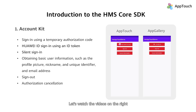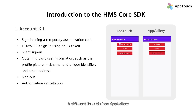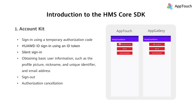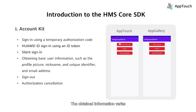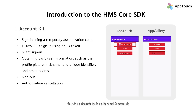Let's watch the videos on the right and learn about the sign-in authorization function of AccountKit. Sign-in authorization on AppTouch is different from that on AppGallery — the two videos will shed some light on the differences. First, you need to obtain the authentication mode icon and its information by calling the relevant API of AccountKit. The obtained information varies depending on the distribution channel. For example, the text under the icon for AppTouch is AppIslandAccount, and for AppGallery it is Huawei ID.